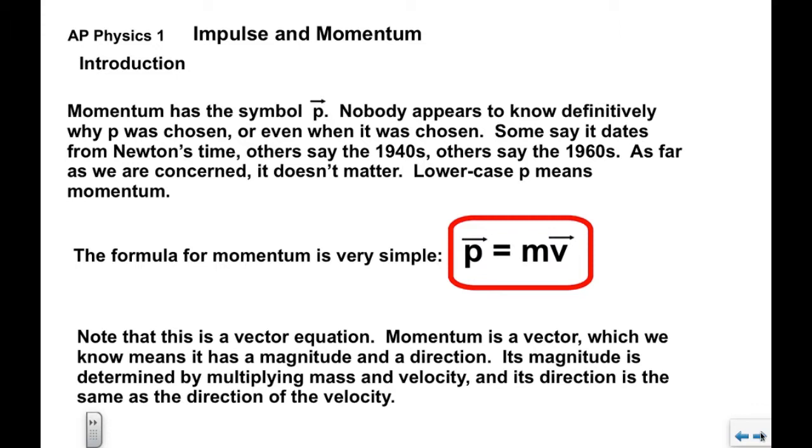I want you to note that this is a vector equation. Momentum is a vector. We know that means it has a magnitude and a direction. The magnitude is determined by multiplying the mass and the magnitude of the velocity, and the direction is the same as the direction of the velocity.